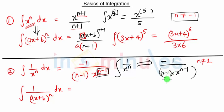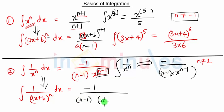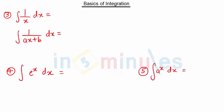The modified version follows similarly: the integration of 1 upon (ax + b) raised to n also gives n minus 1 in the power, and we additionally multiply by the coefficient a in the denominator. So the formula for integration of 1 upon (ax + b) raised to n includes that coefficient a.